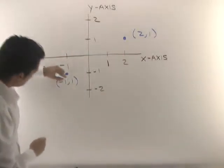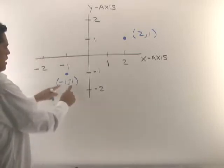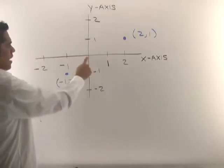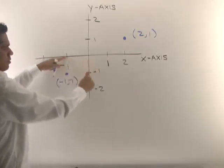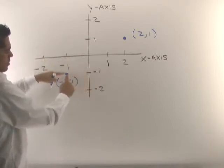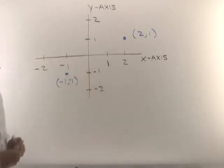move negative one, and that gives you this point right here. So that's how you plot points.